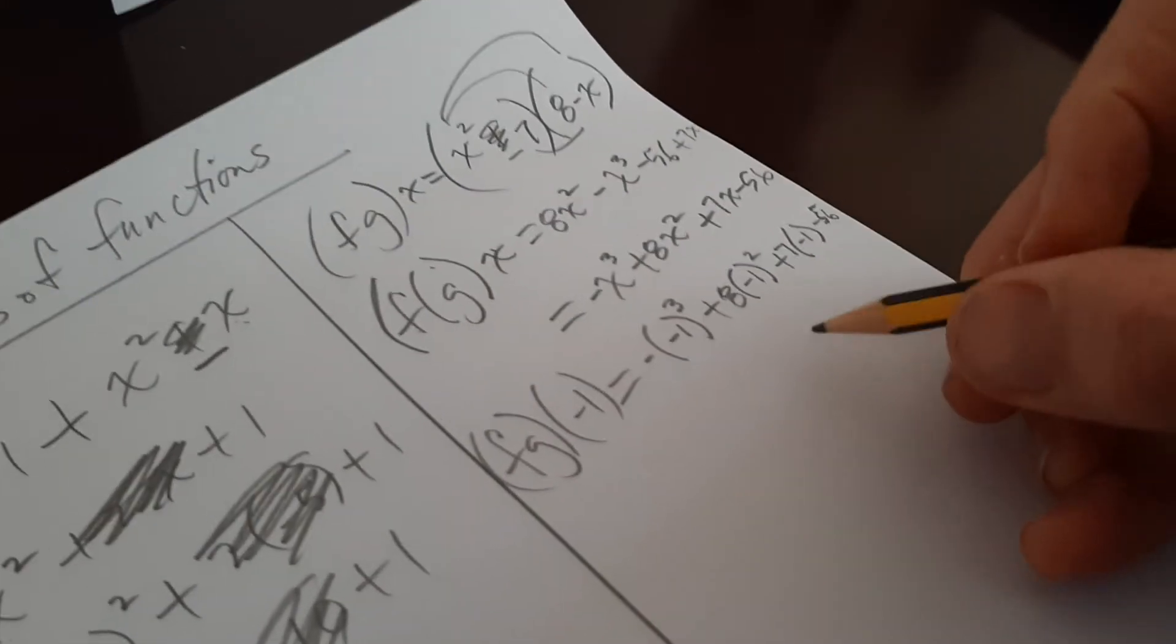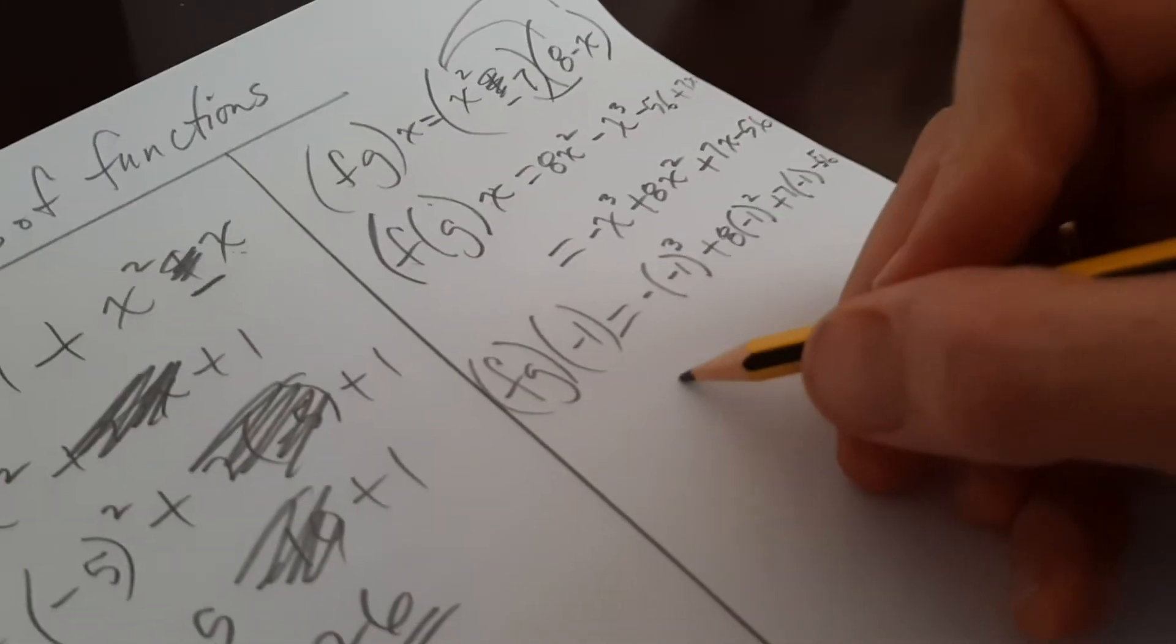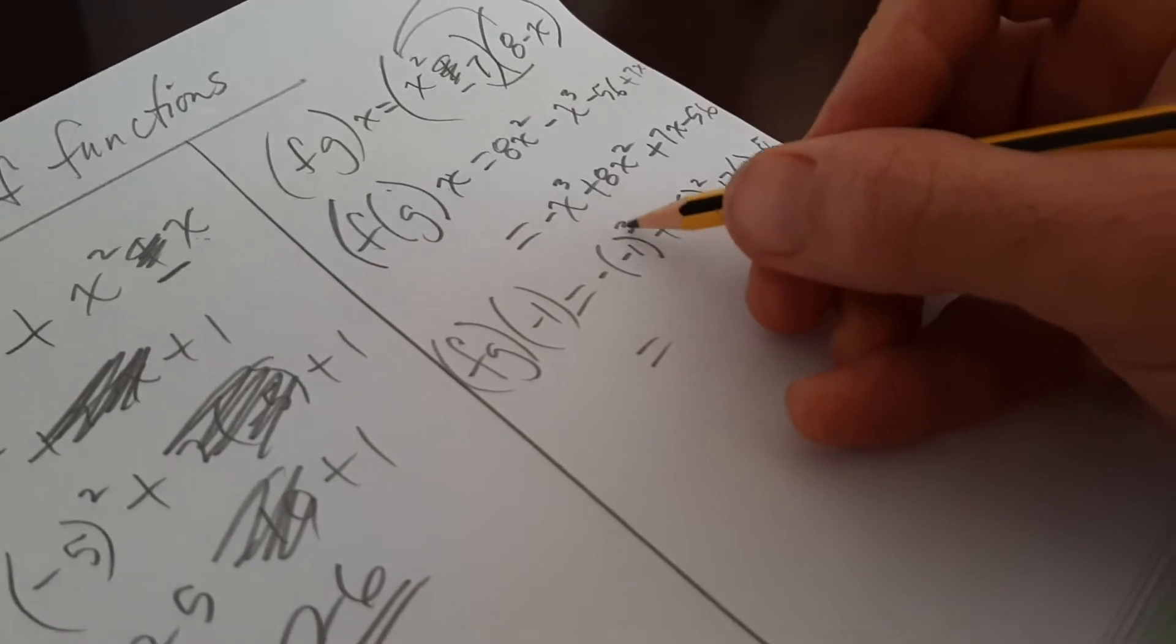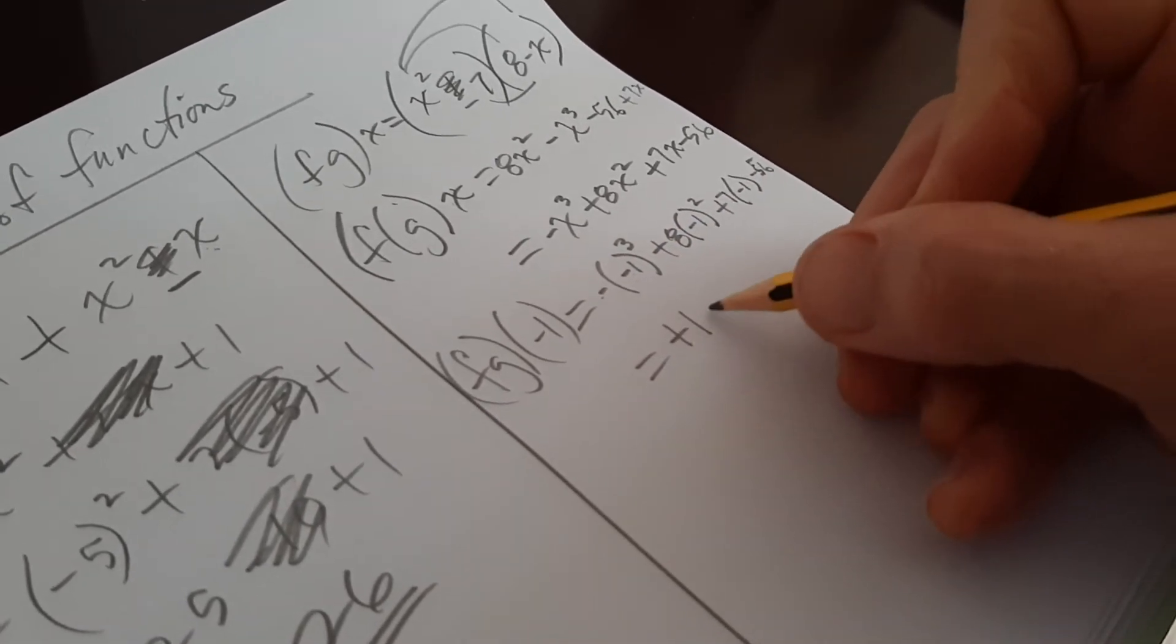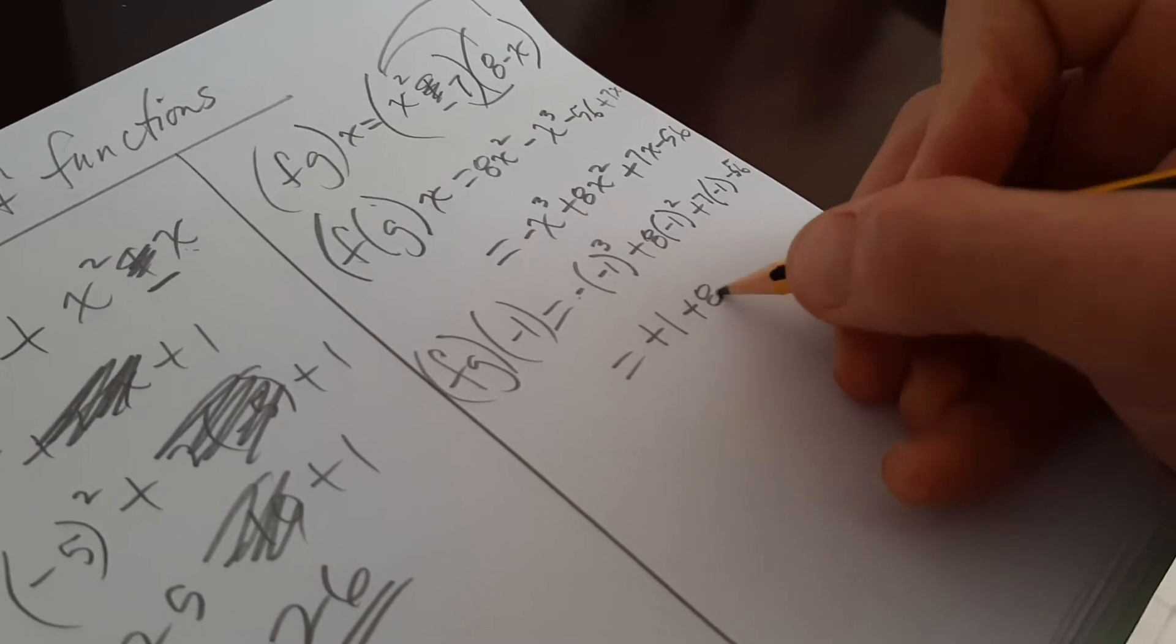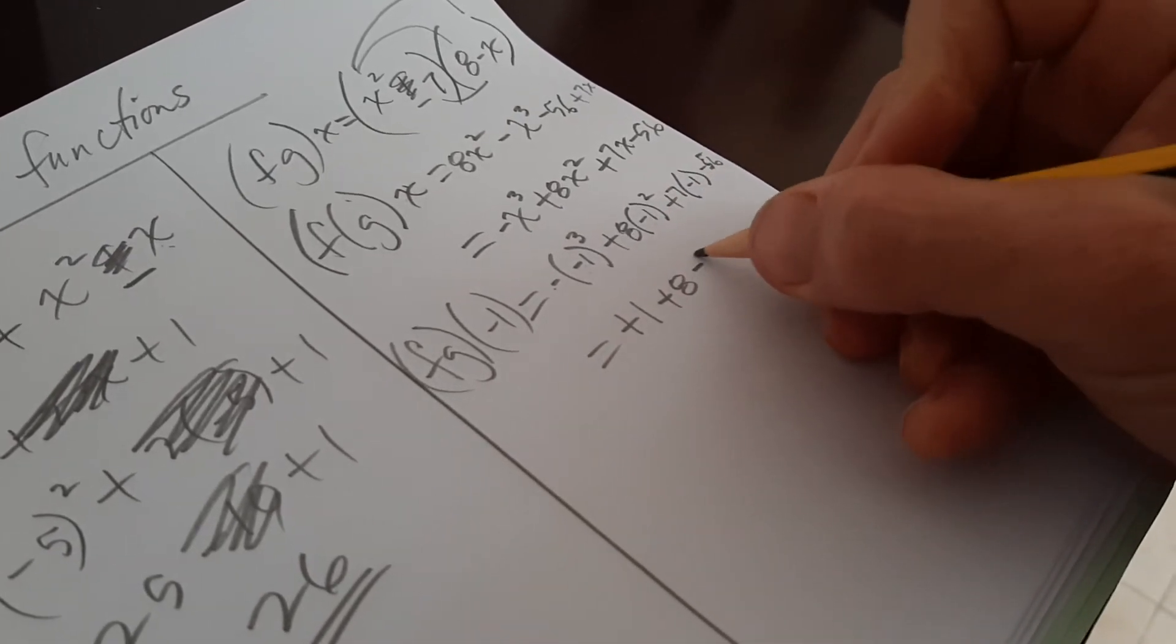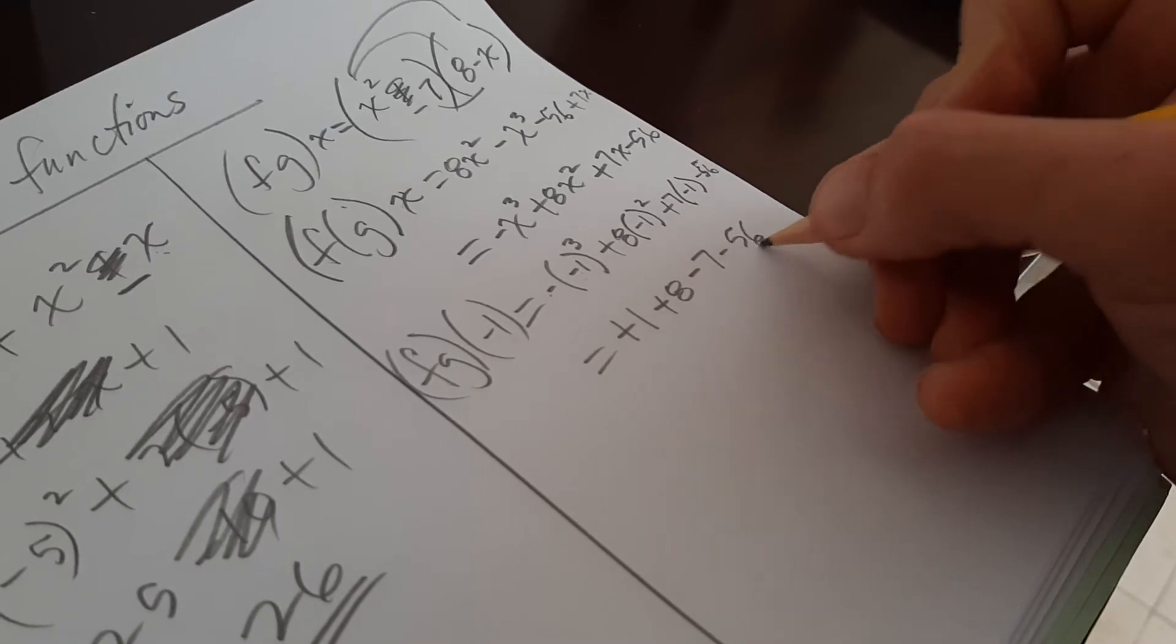These on the test, I believe, are multiple choice. So let me get this. Minus, a minus. And this is going to be a minus 1. That will be a plus 1. Plus 8, right? Minus 1 squared times 8 minus 7 minus 56.